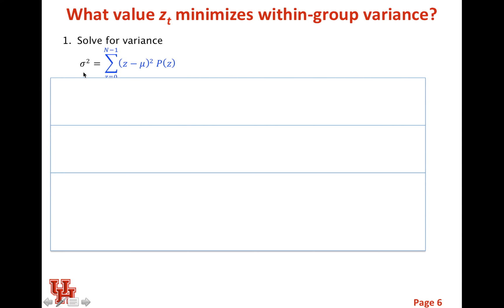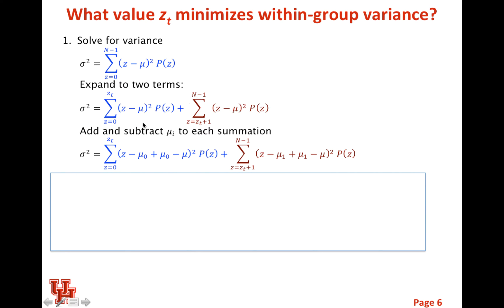The total variance is defined as the probability value times our gray-level value minus our mean value squared. We want to rewrite this variance as the sum of both our within and our between-group variance. The first thing we do is we can expand this into two terms, where the first term is everything that has to do with the background, and the second term is everything in the foreground. The background is summed from 0 to Zt, whereas the foreground is Zt plus 1 to our largest gray-level value, which is n minus 1.